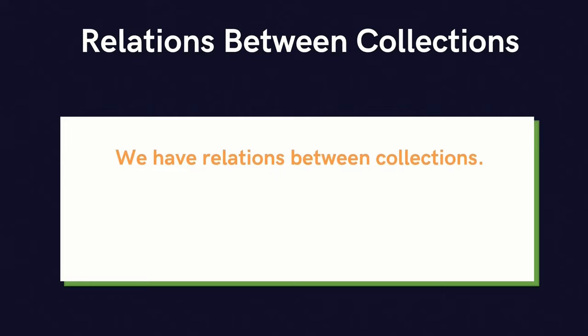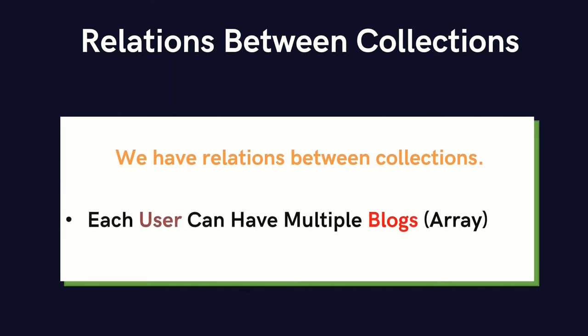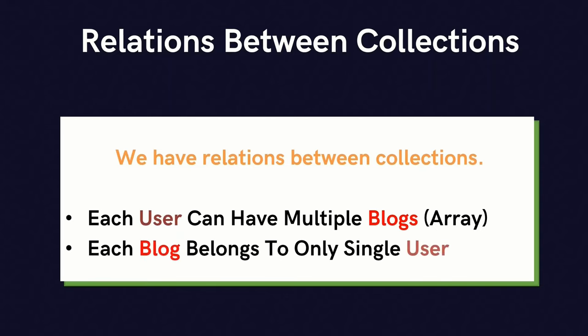Inside MongoDB we have relations between collections. We have two collections: users and blocks. Each user can have multiple blocks — an array of blocks — but each block belongs to only a single user. This is the schema structure we are using for the database.